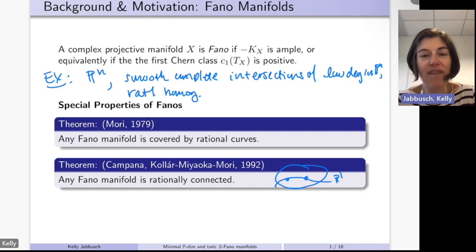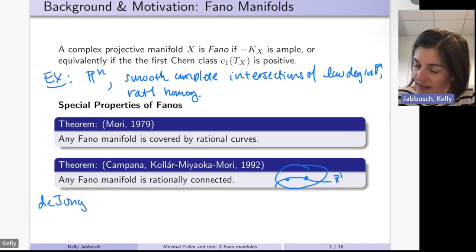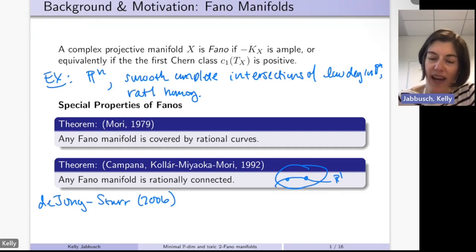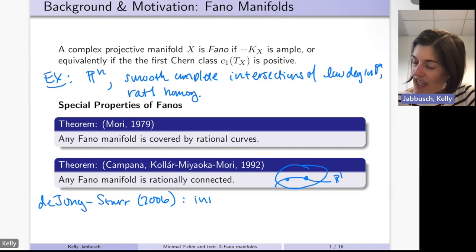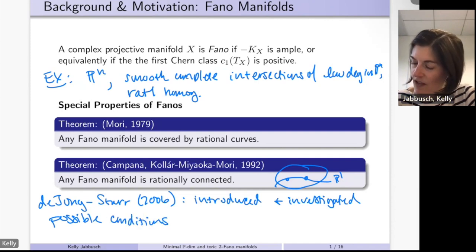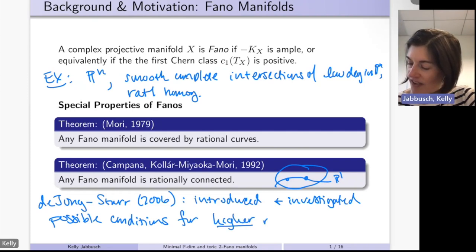De Jong and Starr, around 2006, started thinking about an idea of higher rational connectedness. They introduced and investigated possible conditions for generalizing the results of Mori and Campana–Kollár–Miyaoka–Mori for what they called higher rational connectedness.